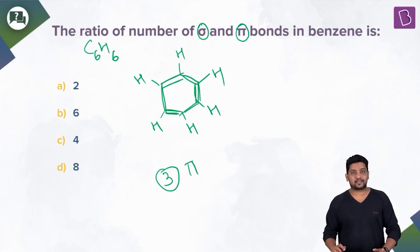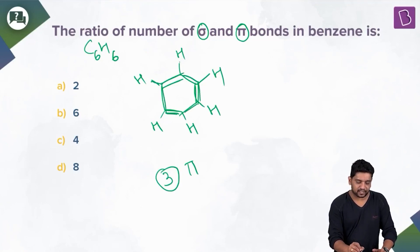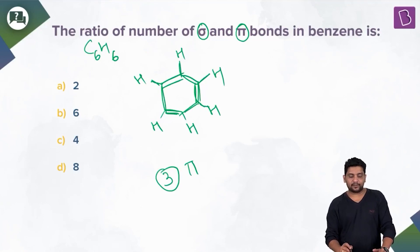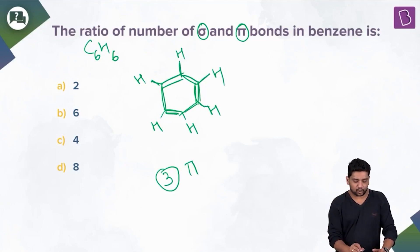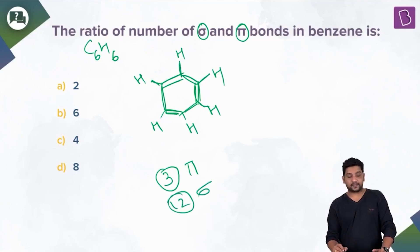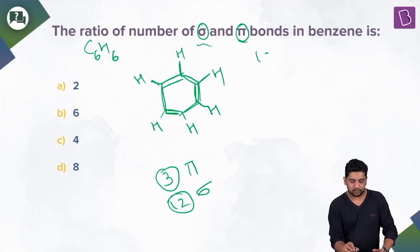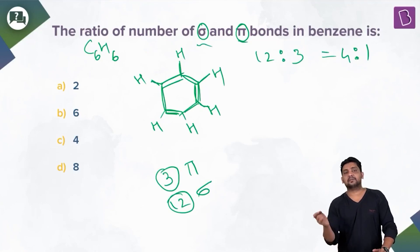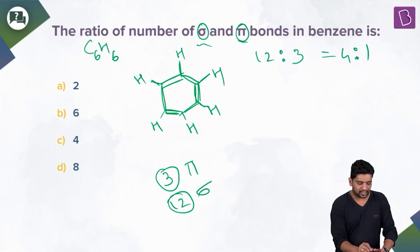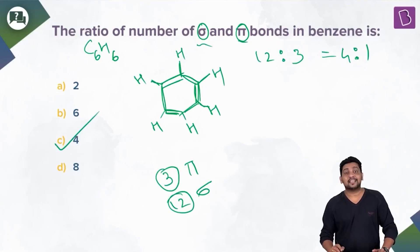Within the ring there are six C–C sigma bonds, and each carbon is attached to one hydrogen via a sigma bond — six more. Total: 12 sigma bonds. Ratio of sigma to pi = 12:3 = 4:1. Correct answer is option C, which is 4.